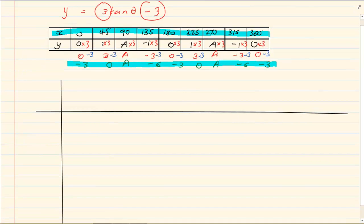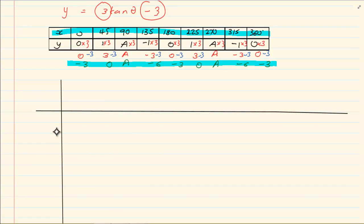Okay now with this here we need to go up to minus 6. So if we got 1, 2, 3, 4, 5, 6. Remember it is down so we are negative. And then this way here we still got our 0, 45. Okay so let us plot now. We have 0 and minus 3. Then we have 45 and 0. Then on 90 we have an asymptote.